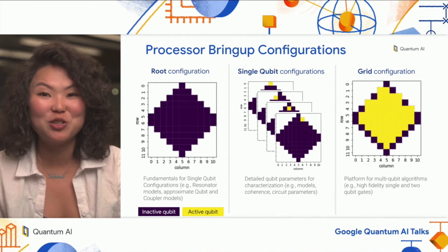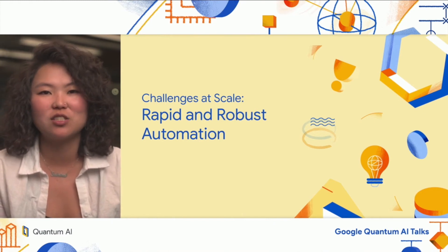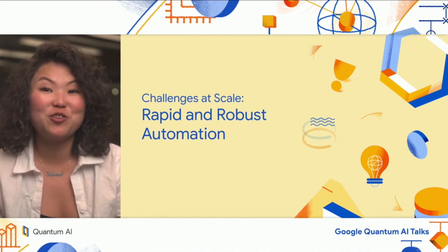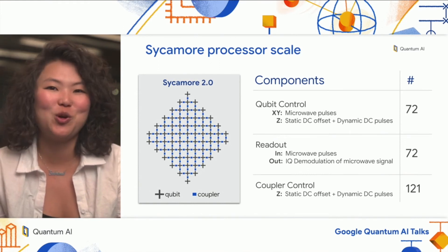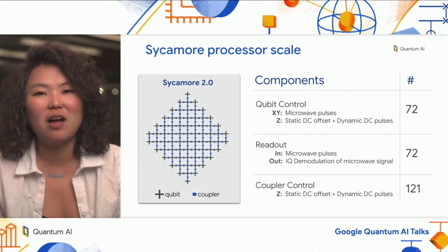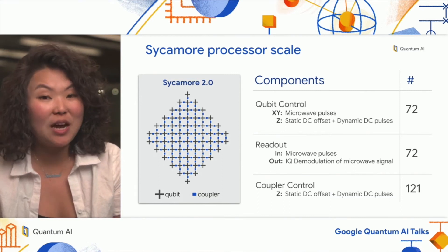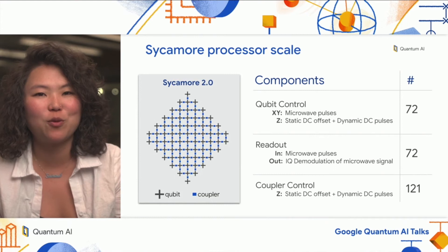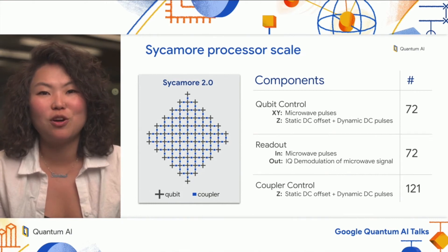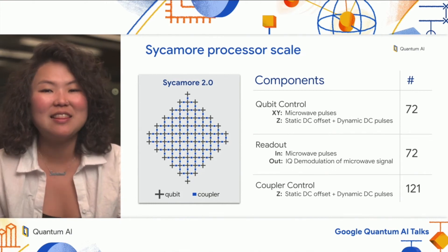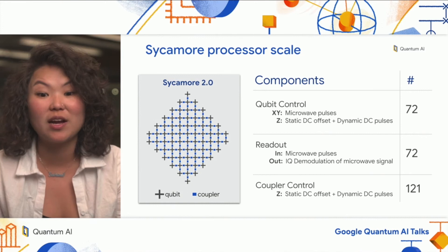I'll frame our scale challenges in the context of our Sycamore 2 processor. Our second-generation Sycamore has 72 flux-tunable qubits, 72 readout resonators, and 121 tunable couplers. For qubit control, we rely on microwave pulses and static and dynamic DC biases to change the frequency of our tunable qubits. For readout, we multiplex six resonators per readout line and perform measurement by sending microwave pulses in and demodulating the return signal at room temperature. Our tunable couplers also require both static and dynamic DC biases, which allows us to control the coupling between qubits when we want them isolated versus when we want them to interact in an entangling interaction.